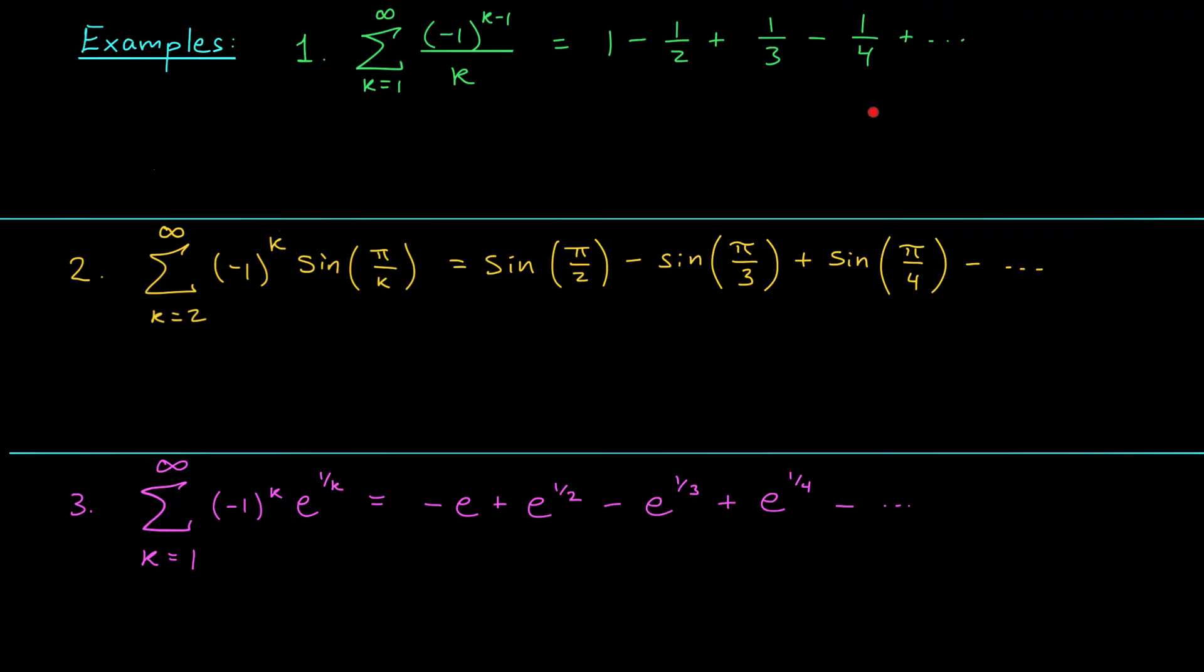Starting with example one, we have the alternating harmonic series. You can see that the signs are switching between plus and minus. But if I ignore those sign switches, I get terms bk equals one over k. Now what do we have to check? If we want to apply the alternating series test, we have to make sure that these terms are decreasing and tend to zero. Well here, this is going to be the case. My sequence one over k is definitely decreasing. And as k goes off to infinity, one over k tends to zero.